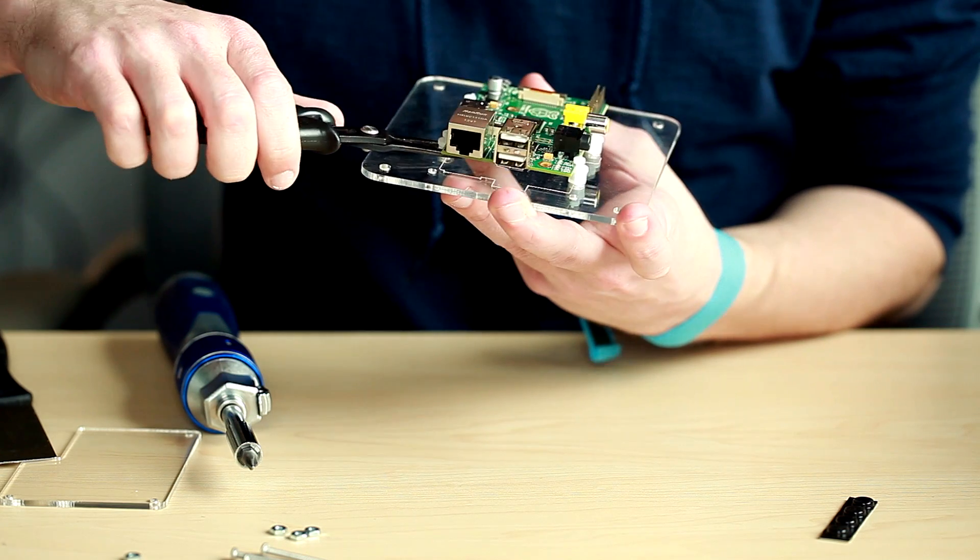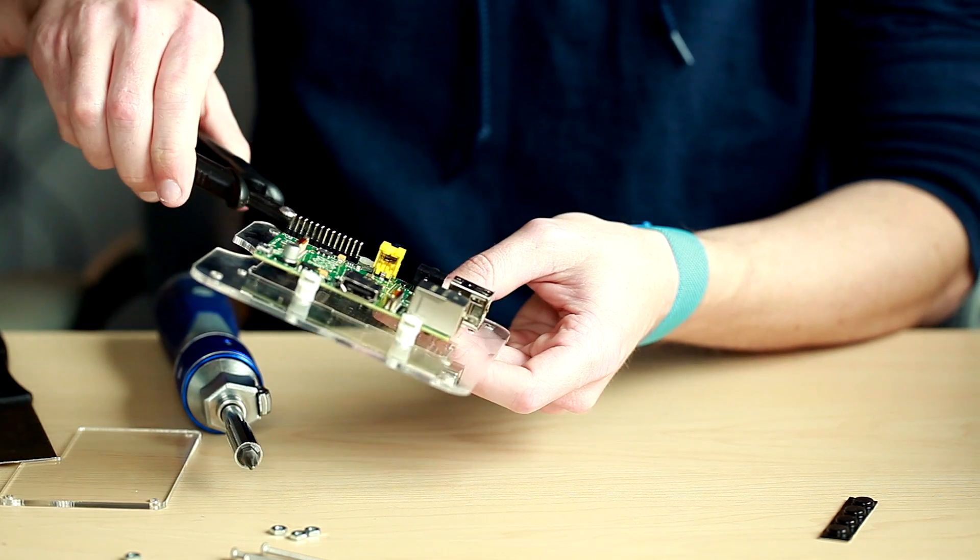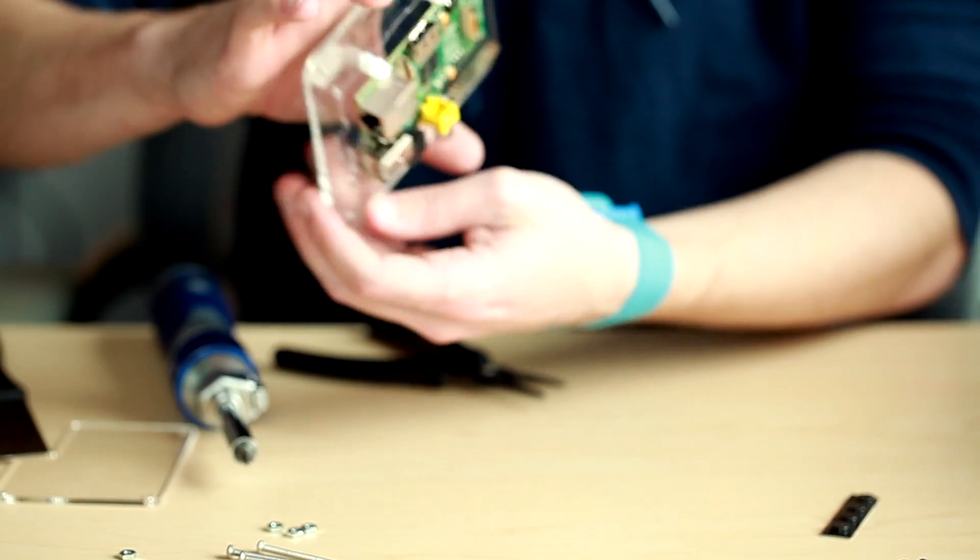Okay, now you can secure your Pi by turning your posts into the board. Don't tighten it too much, you don't want to crack the PCB. At that point, you should now have it mounted.